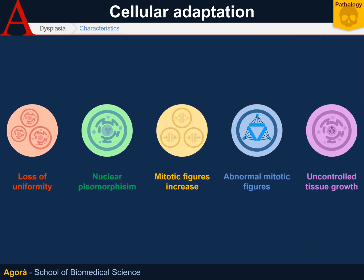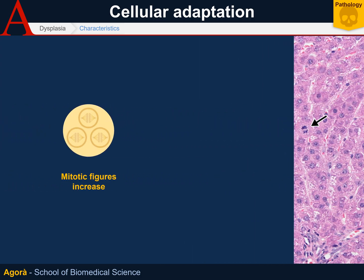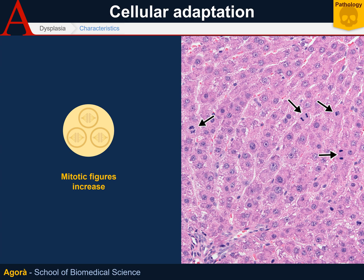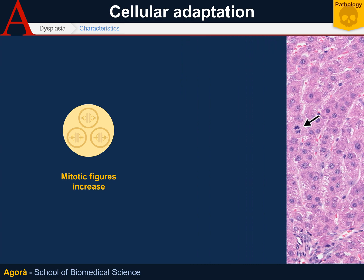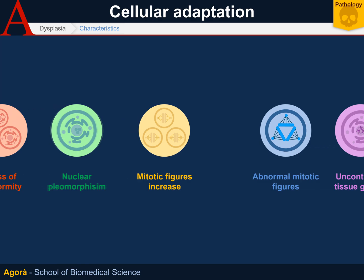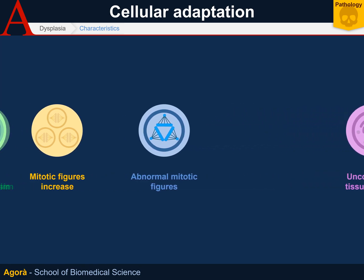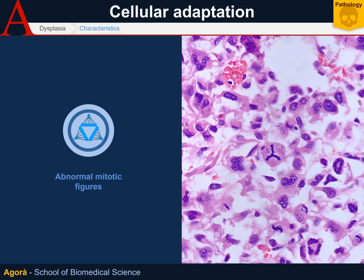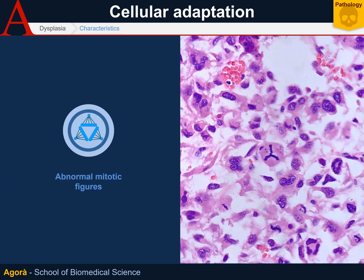Mitotic figures, which are normally extremely rare in tissues, increase in number in dysplastic tissues. In these tissues, mitotic figures are instead quite common, as well as abnormal mitotic figures, such as tripolar spindles.